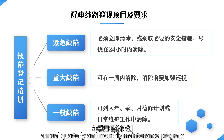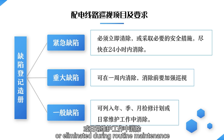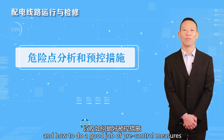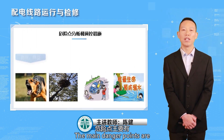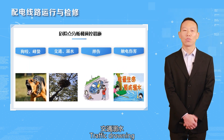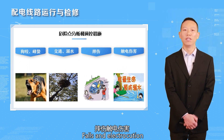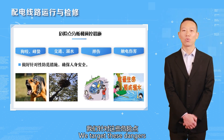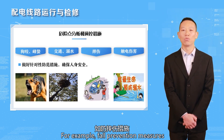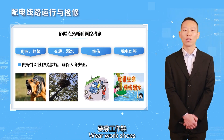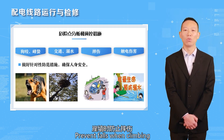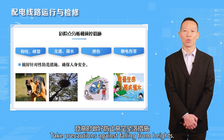The main danger points during inspection are dog bites and bee stings, traffic incidents, drowning, falls, and electrocution. We must take appropriate precautions to ensure personal safety. For example, fall prevention measures include wearing work shoes, taking care on slippery roads or when crossing ditches, preventing falls when climbing, and taking precautions against falling from height.